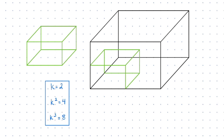And the same thing if we take this side — we're going to have one face there, and then two, three, and then four. That's happening for every face. So in terms of the surface area, if the linear scale factor is 2, we're going to get four times as many faces onto the new shape.